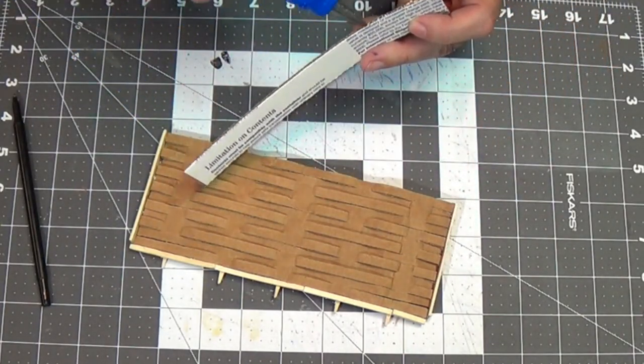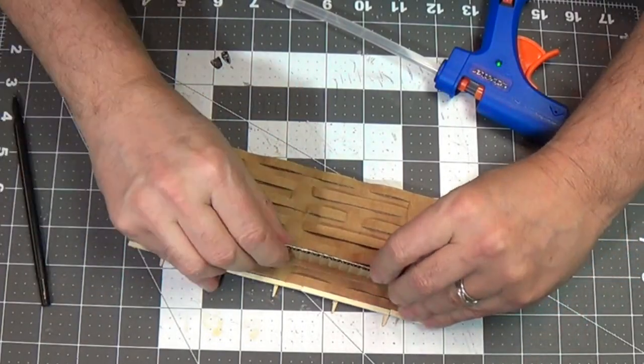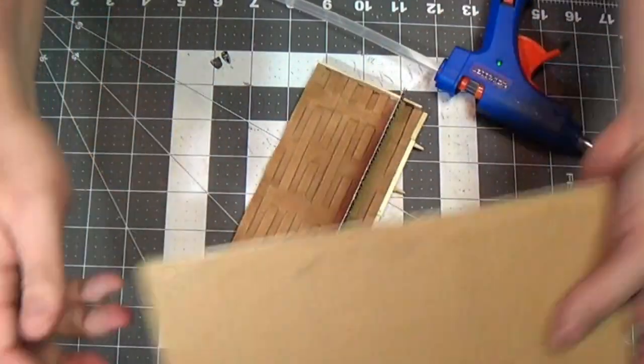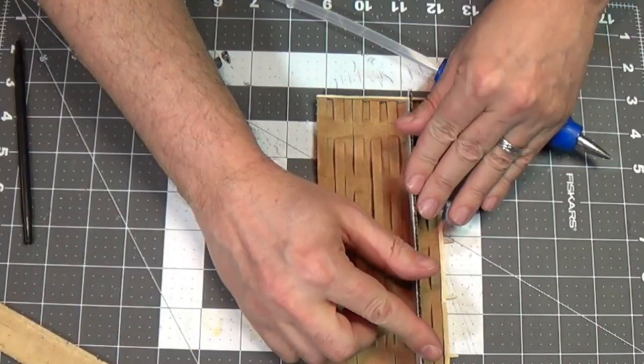And then I'll just glue it with my hot glue. And ta-da! I've got a walkway. So it couldn't be easier, right? I'm going to kind of square it up there with a ruler.